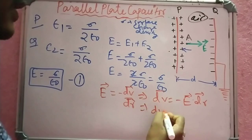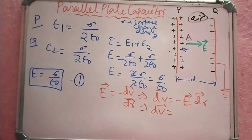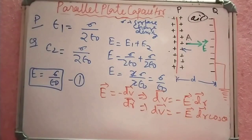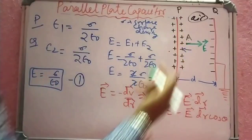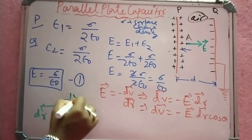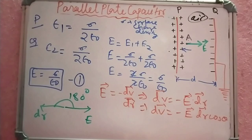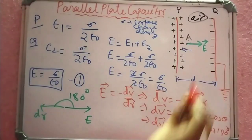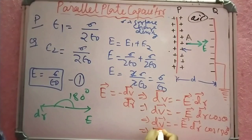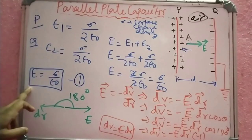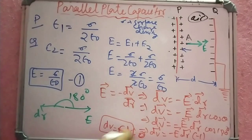So dV equals minus E dot dr, which equals minus E dr cos theta. The electric field E is in one direction and dr is in the opposite direction, so the angle between them is 180 degrees. So dV equals minus E dr cos 180°, and since cos 180° equals minus 1, dV equals E dr.